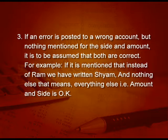Next point: if the error is posted to a wrong account but nothing is mentioned about the side and the amount, then it is assumed that both are correct. For example, if it is mentioned that instead of Ram we have written Sham and nothing else is mentioned, that means everything else is okay — the amount is okay, the debit or credit side is okay — the difference is only the name. The trial balance will tell you.